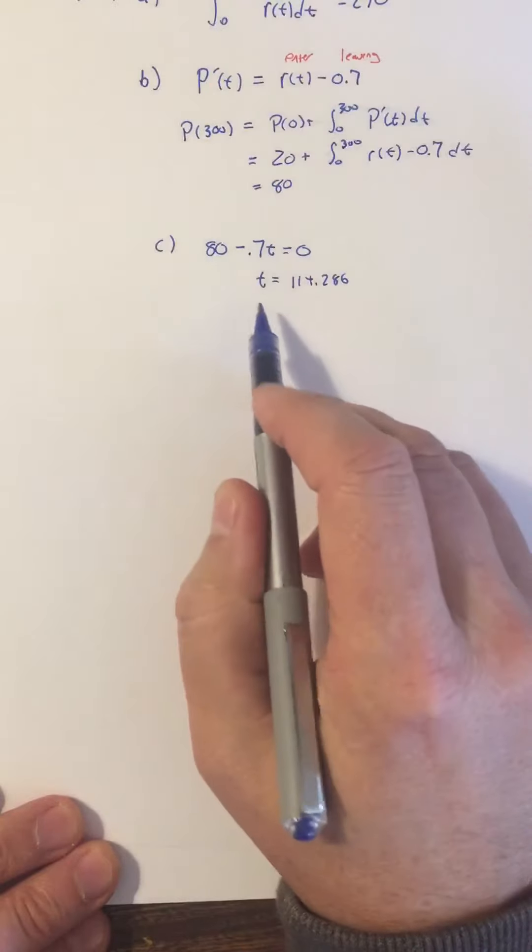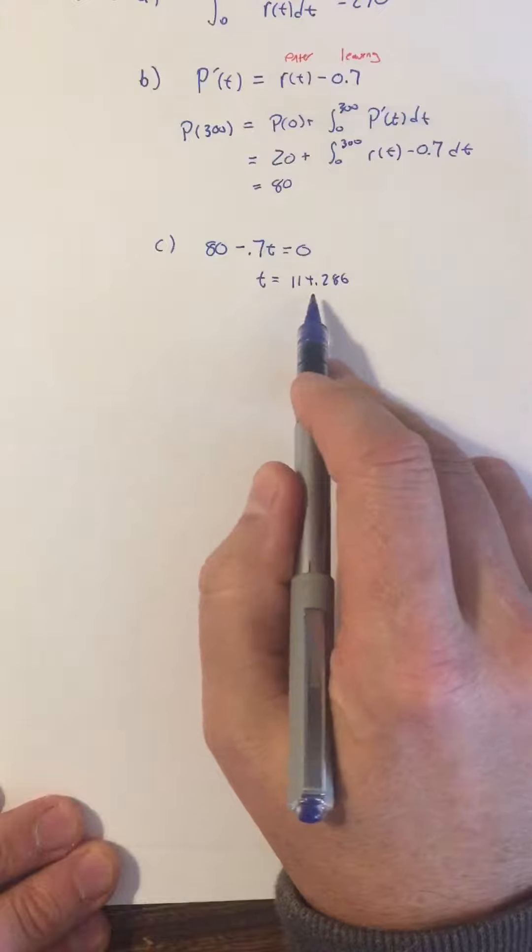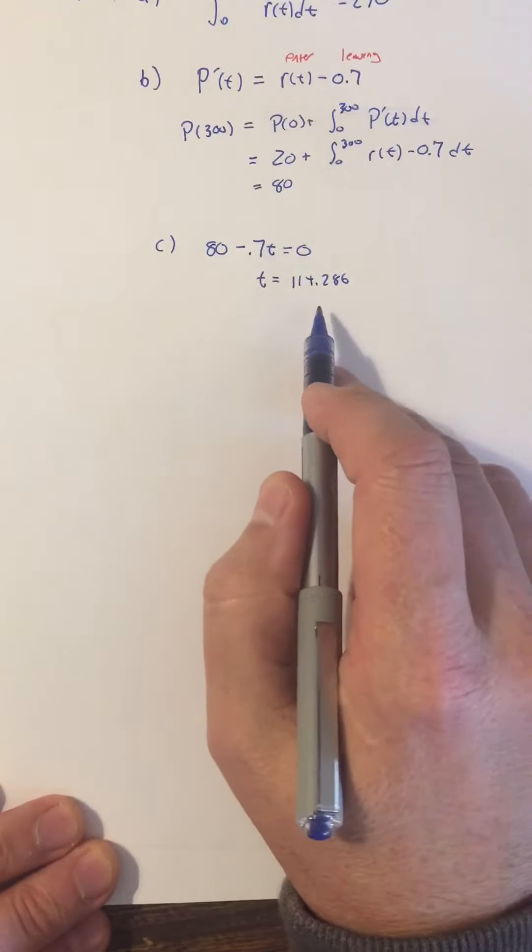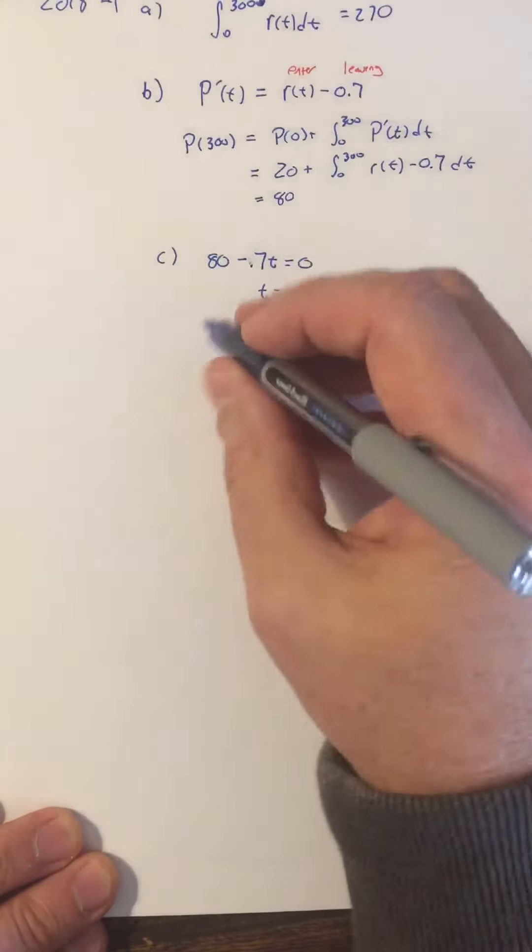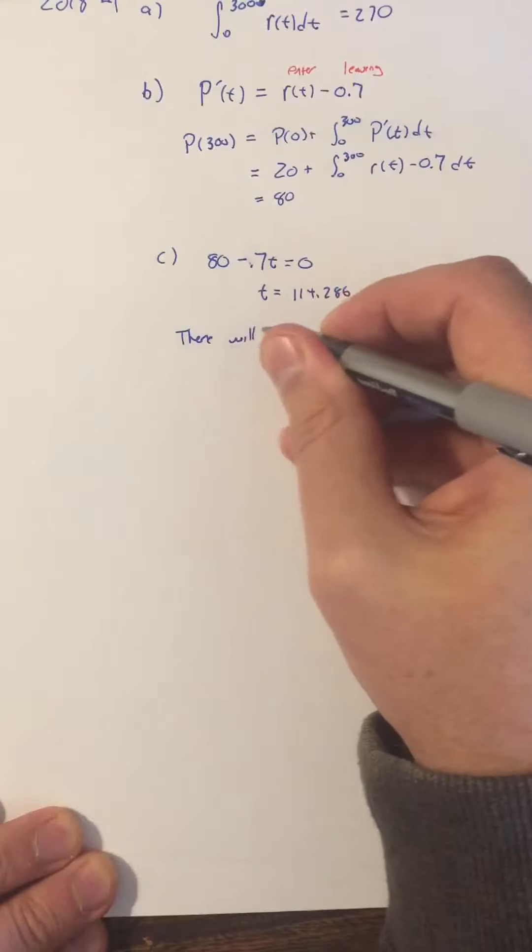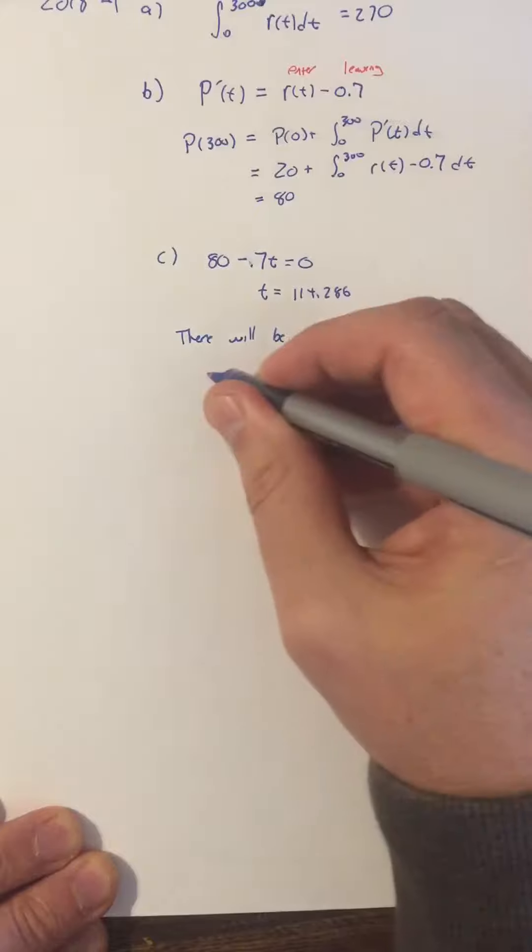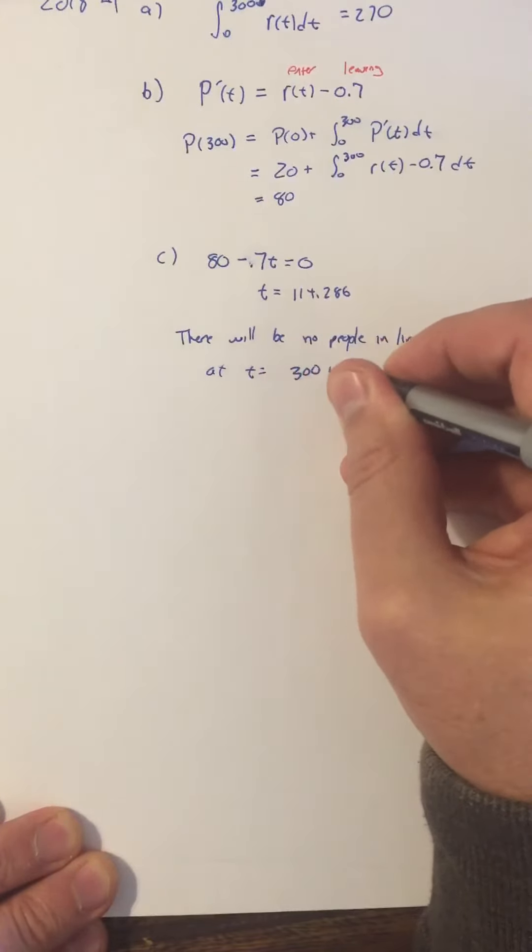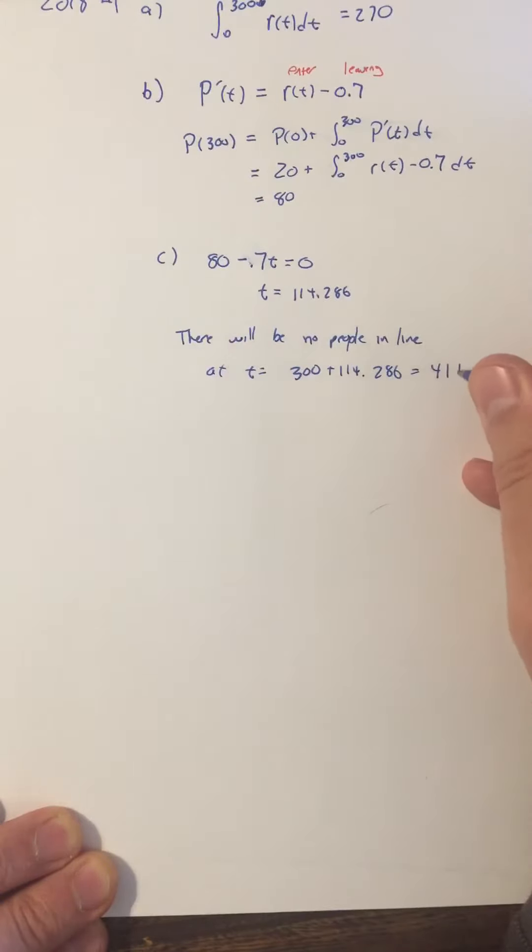But then you have to remember that the 80 people was already at t equals 300. So this is 114.286 seconds after the 300 that got us to 80 people. So you have to say there will be no people in line at t equals 300 plus 114.286, which equals 414.286. Arguably you could leave this right here, but it's easy enough to say it's 414.286. Either one of these is right.